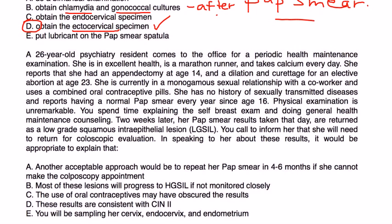Vignette 2: A 26-year-old psychiatry resident comes for a periodic health maintenance exam. She is in excellent health, a marathon runner, takes calcium daily. History includes an appendectomy at 14 and a dilation and curettage for elective abortion at 23. She is in a monogamous relationship, uses combined oral contraceptives, has no STD history, and has had normal pap smears every year since age 16.